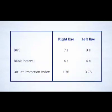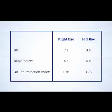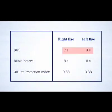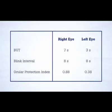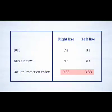In the left eye, the BUT is 3 seconds and the OPI is 0.75, and therefore liable to dry eye symptoms. In another patient with the same BUT values but a blink interval of 8 seconds, the OPI is less than 1 in each eye, and both eyes are liable to symptoms, with the severity predicted to be greater in the left eye.